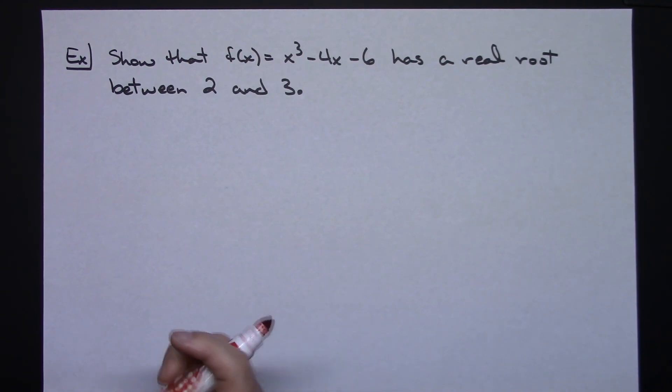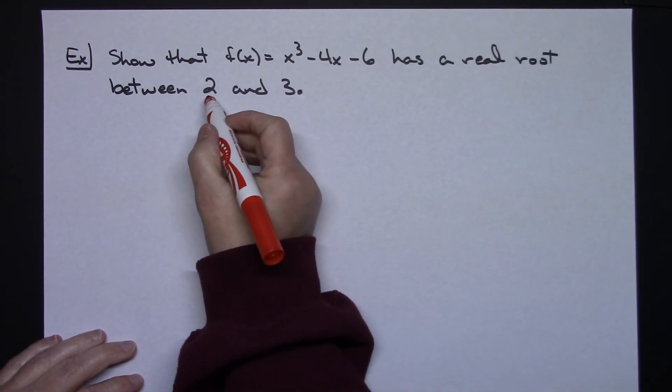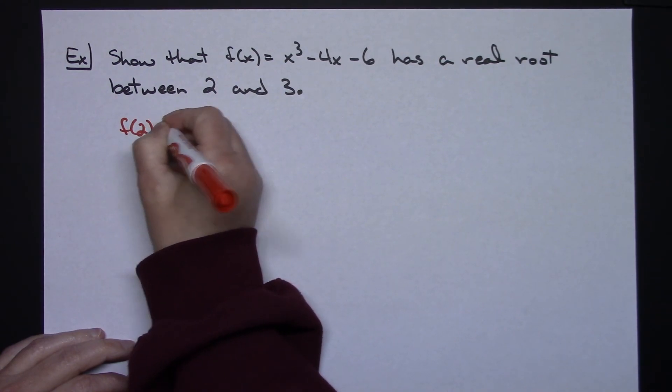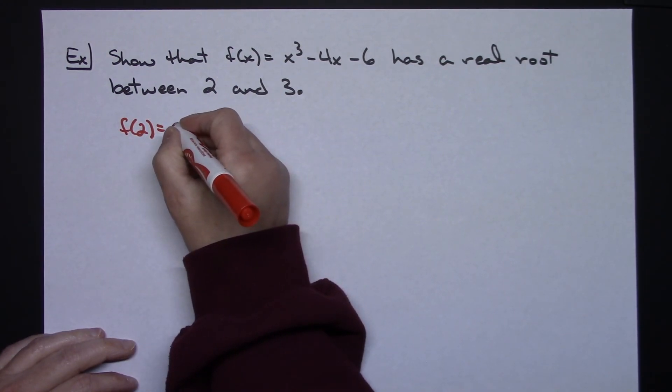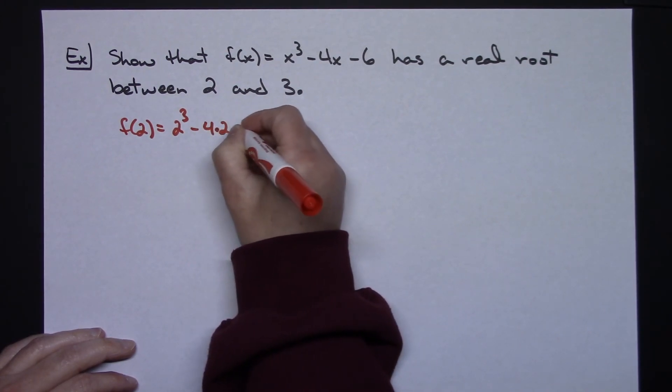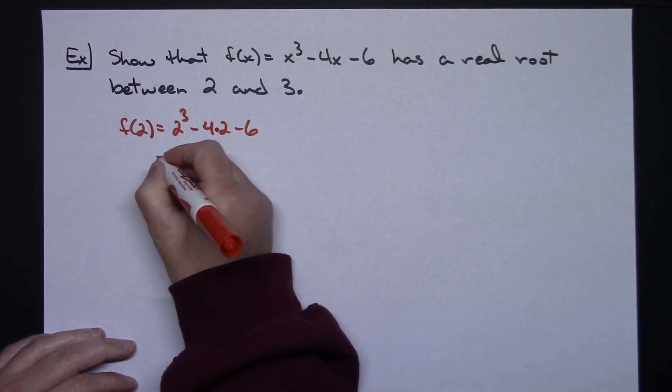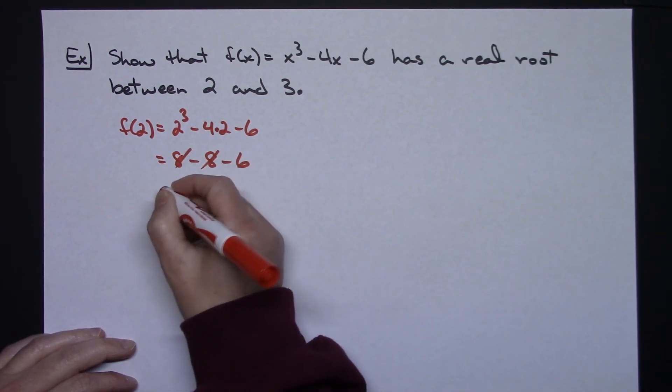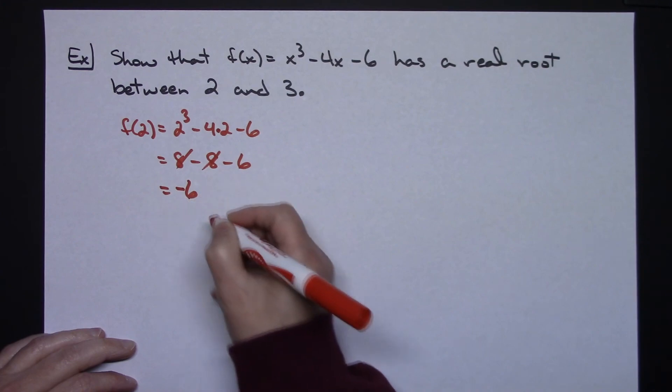So I would take my 2 and plug it into my function. F of 2, plugging that in, I would have 2 to the third minus 4 times 2 minus 6. That's going to give me 8 minus 8 minus 6. Those two 8s are going to go away, giving me a negative 6 value.